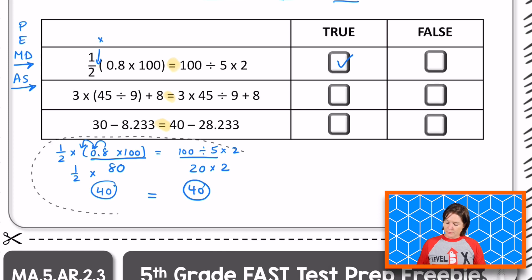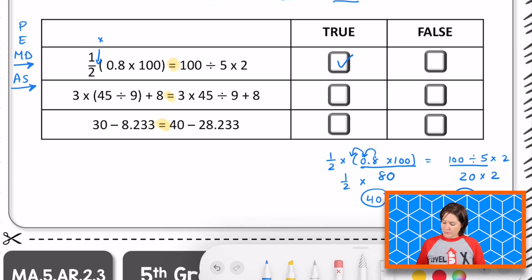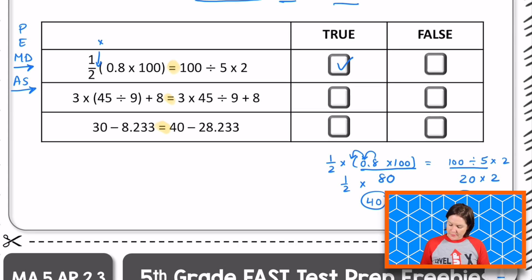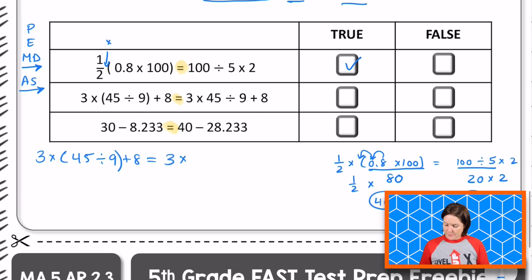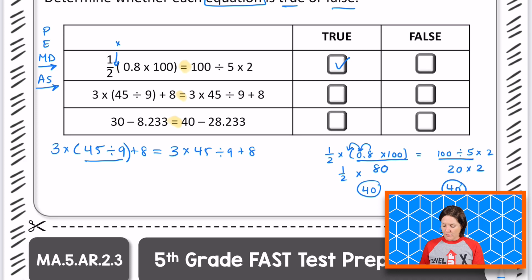Now for the second problem: we have 3 times (45 divided by 9 plus 8) on the left, equals 3 times 45 divided by 9 plus 8 on the right — notice the parentheses on the left side but not the right. Let's solve the left side first, starting with what's in parentheses.